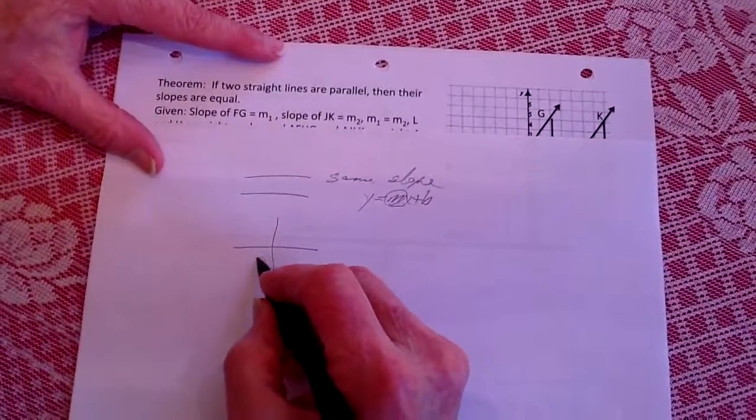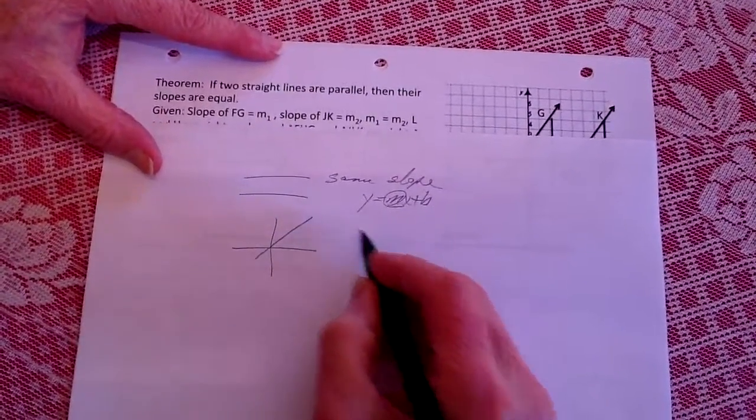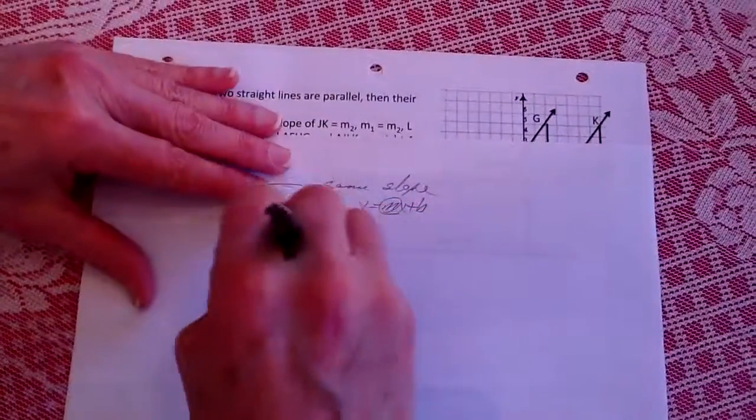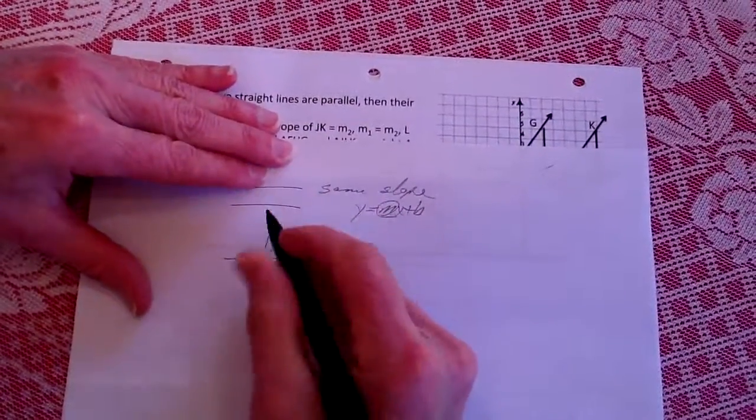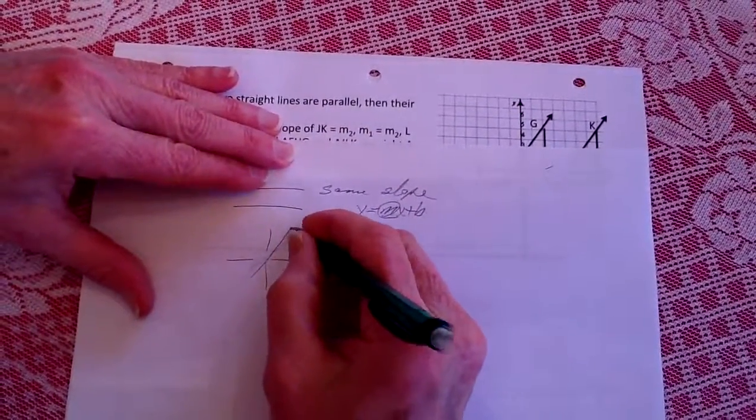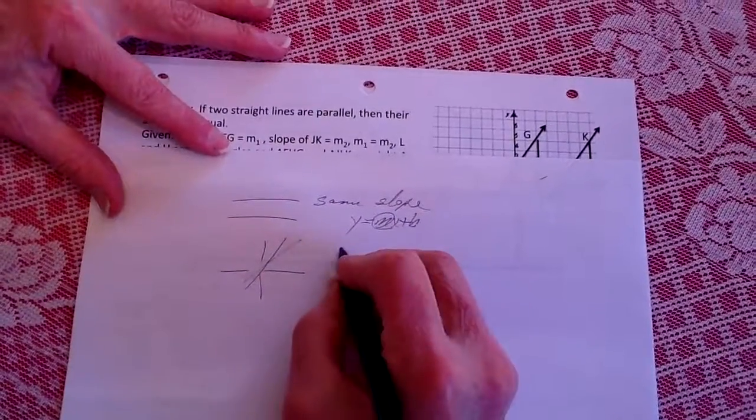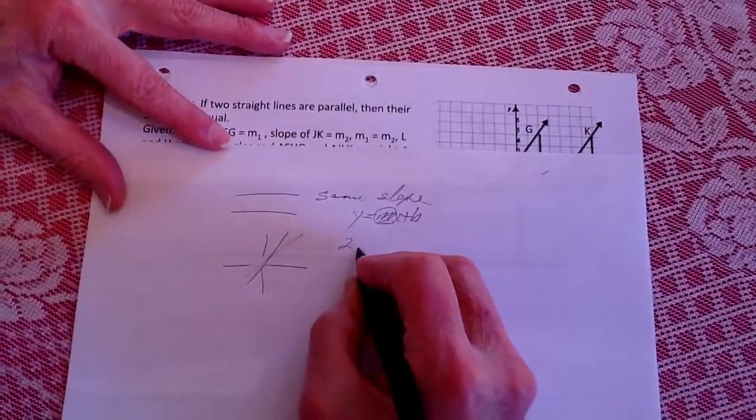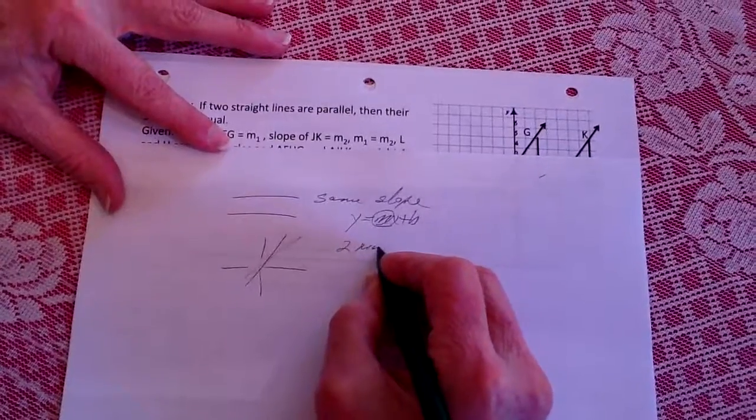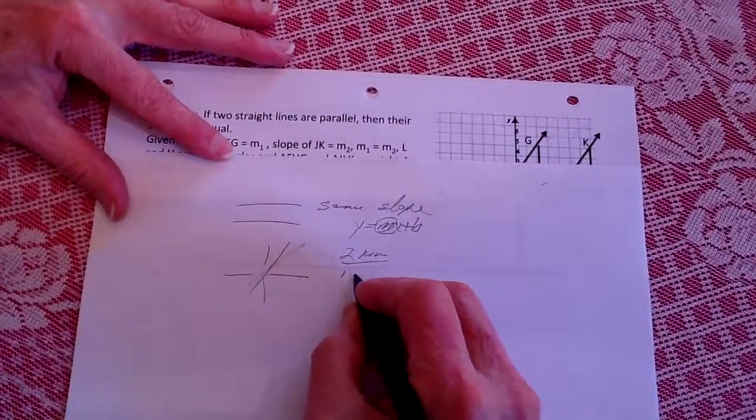We know that if, for instance, I have a line here that has a slope of, let's make this a little bit steeper, let's make this a slope of about like this, which is a 2 to 1, in other words a rise of 2 over 1 run.